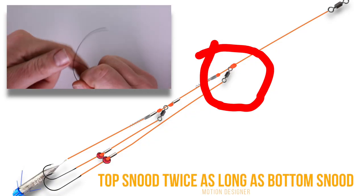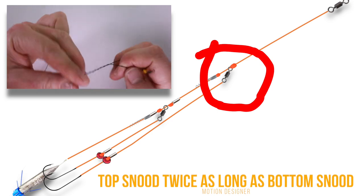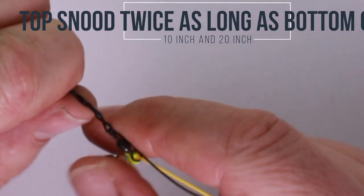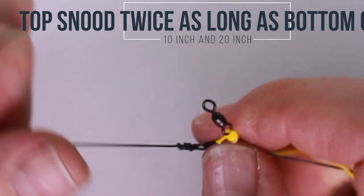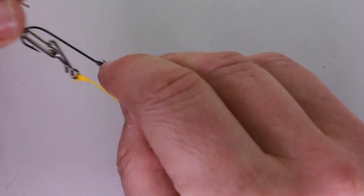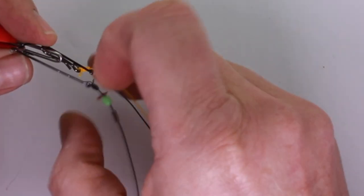And then if you've done your measurements right on it, which I didn't quite do for this one so I had to do this snood again. But tie that on to the last remaining swivel. So when you've tied that second hook snood on, you'll obviously have two hooks and they can both be put on the lead clip.